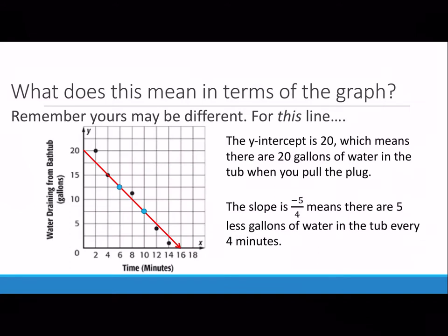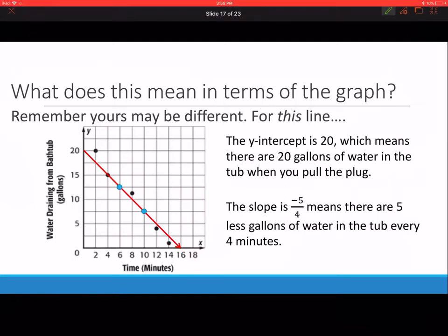What do each of those mean in terms of this problem? The y intercept is 20, which means the tub starts with 20 gallons of water in it. The slope is negative 5 fourths, which means there are 5 less gallons of water in the tub every 4 minutes.